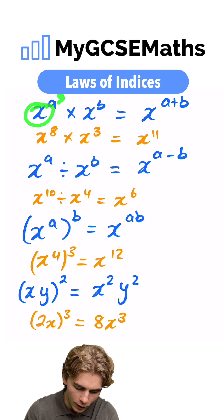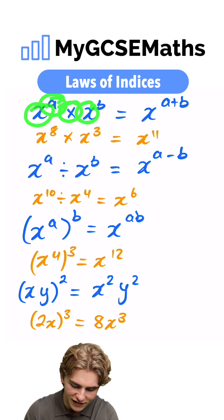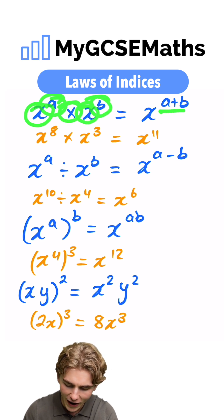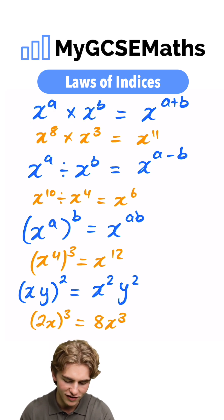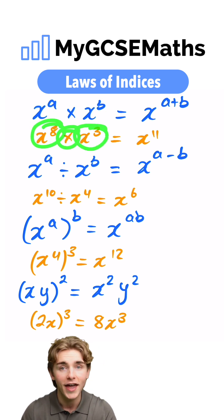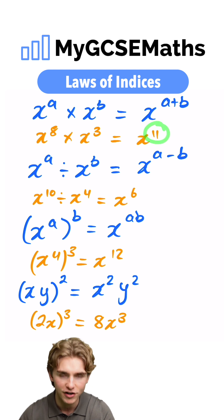When we have a base number to a power and we multiply that by the same base to another power, we're going to add the powers. For example, x to the 8 times by x to the 3, here we would add the powers, 8 plus 3 is 11.